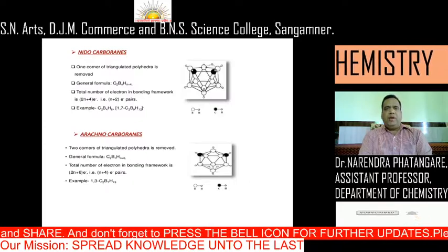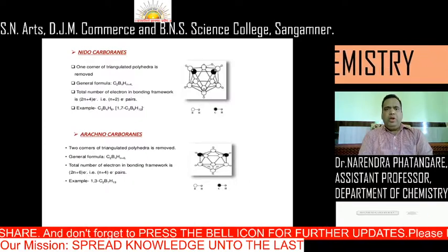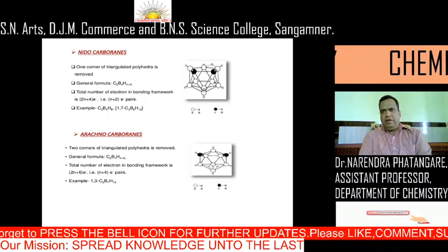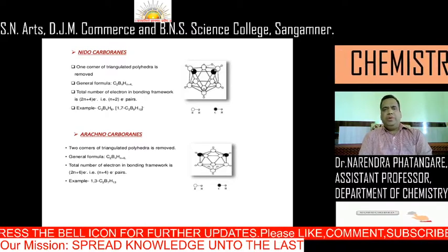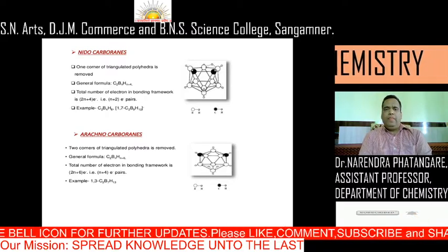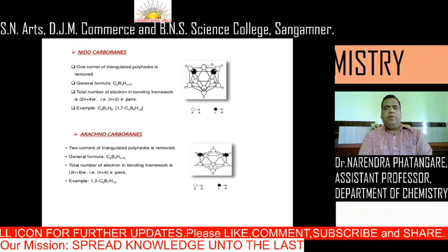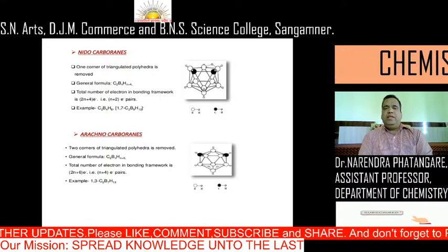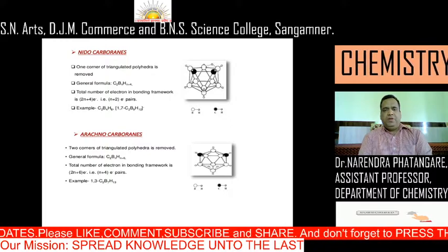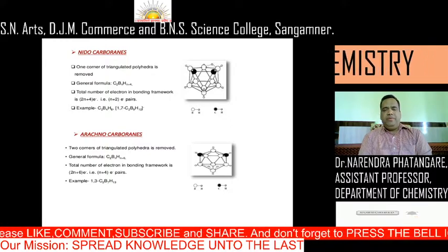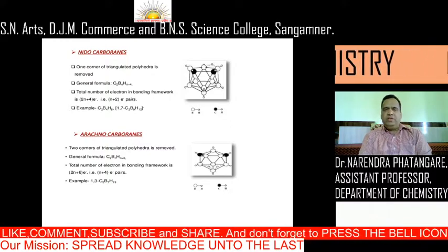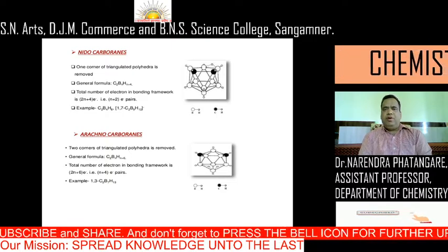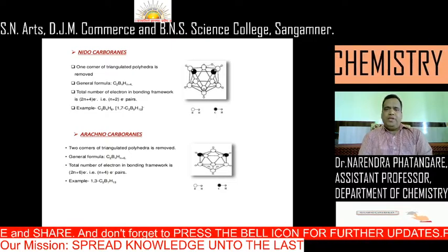Second, nido carboranes are formed when one corner of the triangulated polyhedron is removed. The general formula is C2BnHn+4. The total number of electrons in the bonding framework is 2n+4 electrons, that is n+2 electron pairs. For example, C2B4H8 and C2B9H12 are examples of nido carboranes, as shown in the structure.